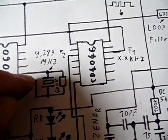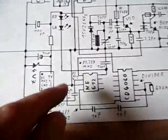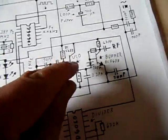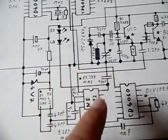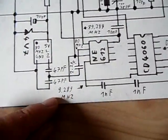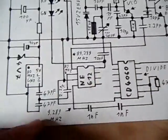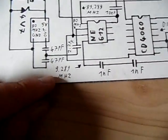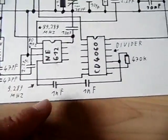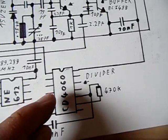We have the frequency from the crystal, which is always the same, and we have the varying frequency from this VCO and this mixer circuit. So now we have, if this VCO is tuned to the frequency that we want to transmit, we have the 9.289 MHz, which go then into another CD4060 chip, which then does the same as this one. It divides the frequency.